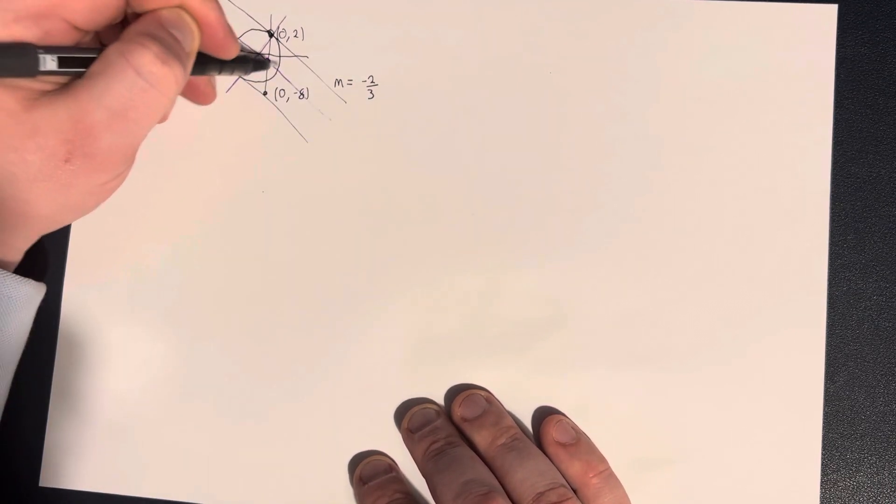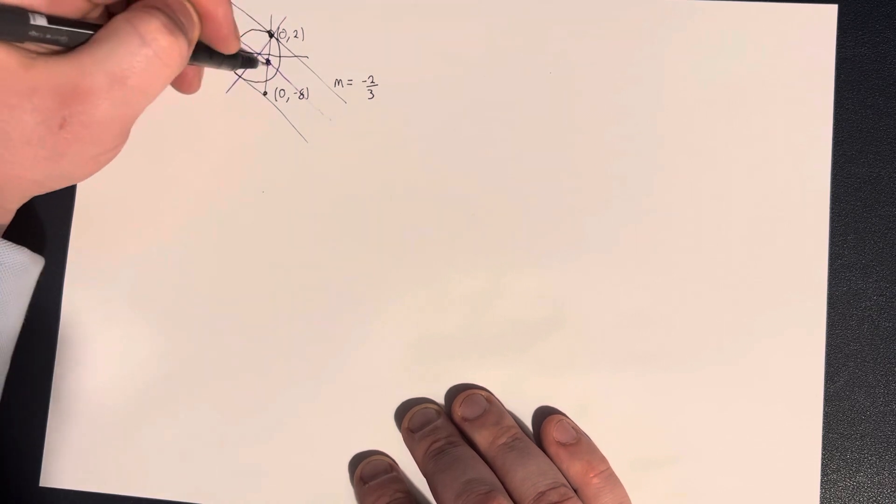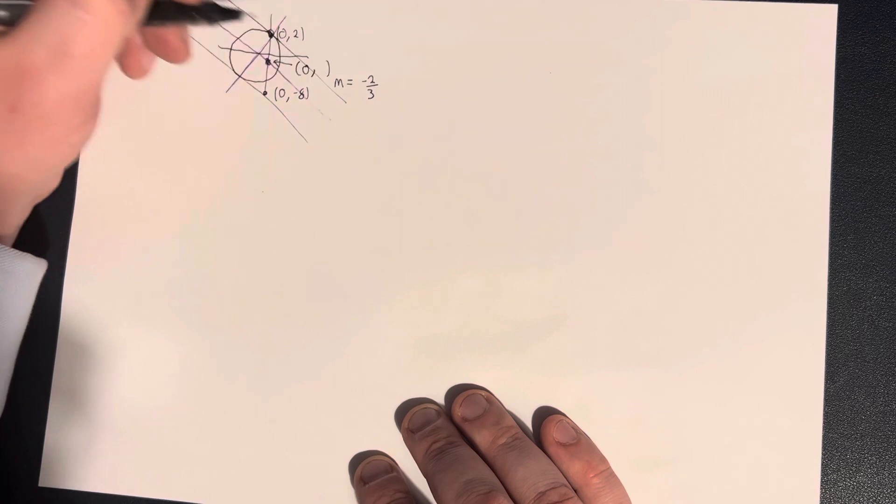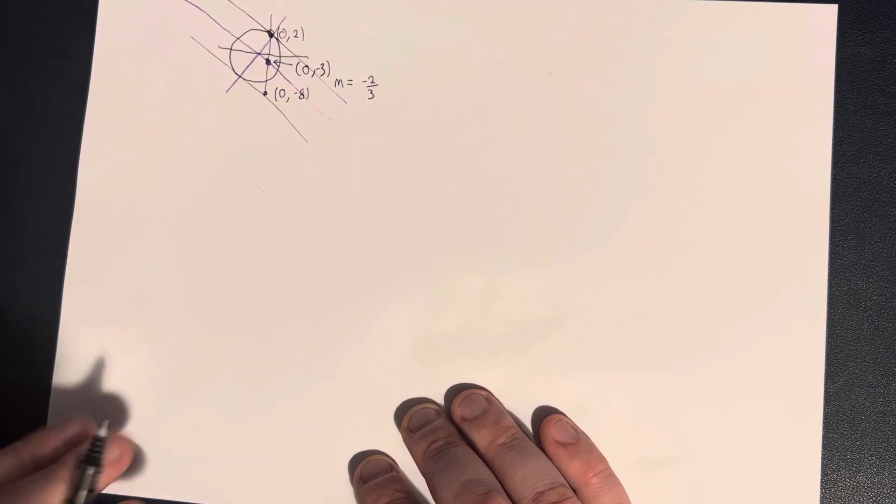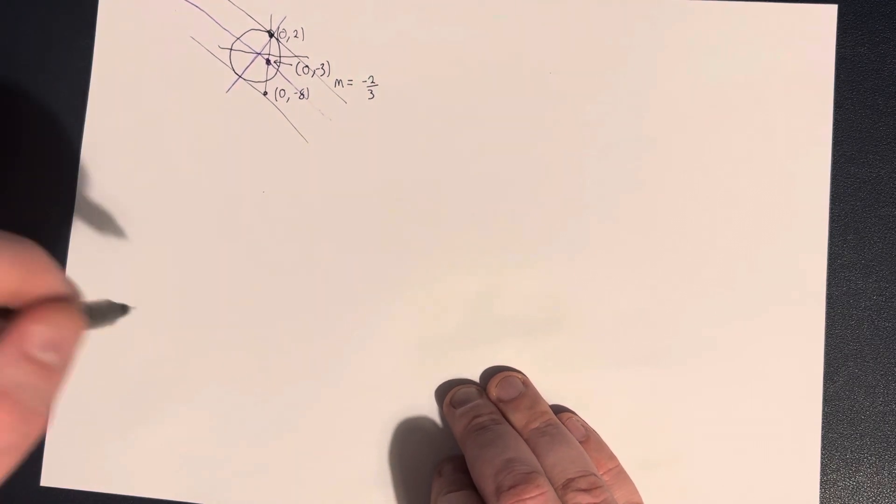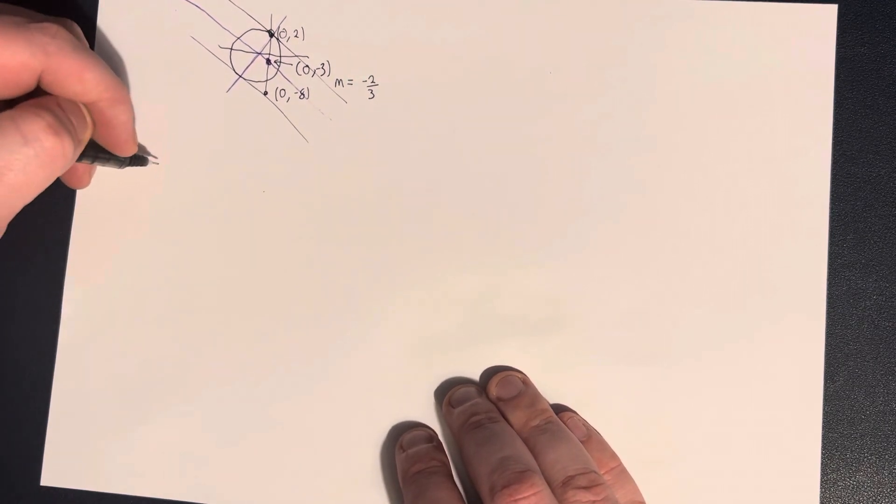We know that the coordinates of this point here, because we have 0, 2 and 0, minus 8, the coordinates of that point are 0, comma, minus 3. Let's work out the equation of this guy here first of all. This is where this approach differs from the approach that we used in class.